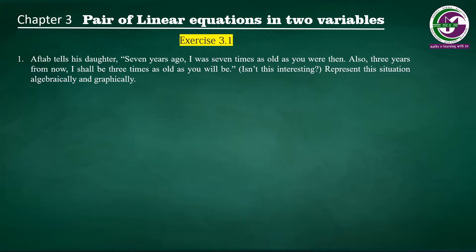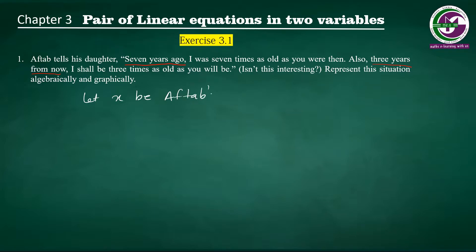First, we identify the key points in the question. There are two relations given, and all ages are referenced to the present age — one is 7 years ago and the other is 3 years from now. We have two unknowns: Aftab's age and daughter's age. For all word problems, we first define the variables. Let x be Aftab's present age and y be daughter's present age.